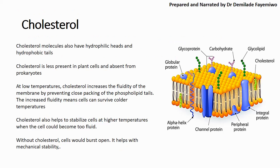What role does cholesterol play in the cell membrane? Cholesterol molecules have hydrophilic heads and hydrophobic tails. Cholesterol is less present in plant cells, which is why cholesterol-free food tends to come from plant sources, and it is also absent from prokaryotes. Plant cells and animal cells are eukaryotic cells, while prokaryotic cells are more like bacteria. When temperature is low, cholesterol increases the fluidity of the membrane by preventing close packing of the phospholipid tails, enabling the cell to survive colder temperatures. When temperature is high, cholesterol also regulates membrane fluidity.